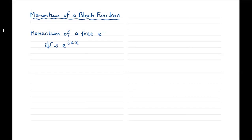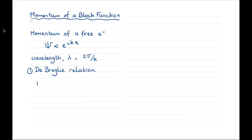We have three ways to determine the momentum of a free electron. The first is to remember that the wavelength of a plane wave is given by two pi divided by the wave vector. So we can immediately write down the momentum using the de Broglie relation: the momentum p for any quantum mechanical particle is h over lambda. So the momentum in the x direction is h-bar times the wave vector k, where h-bar is h over two pi.